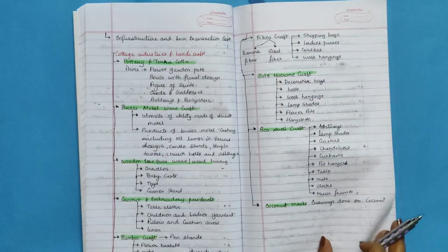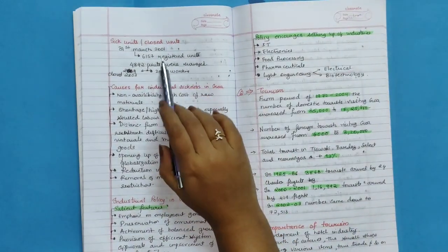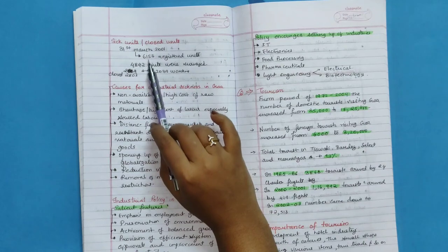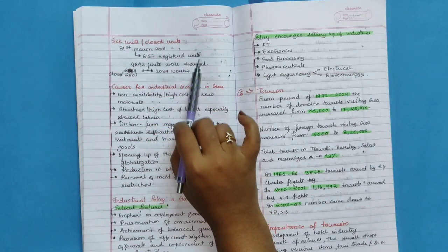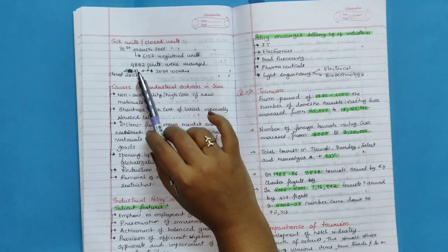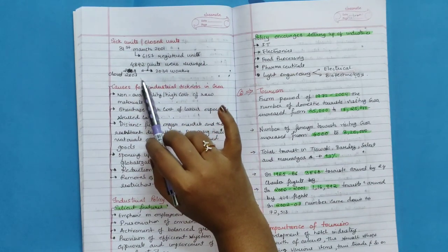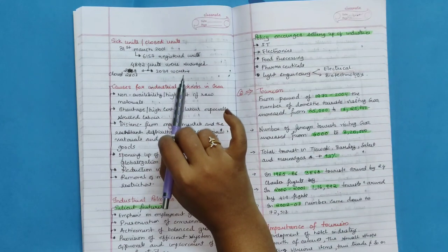Coconut mask carvings done on coconut. Sick units or closed units. On 31st March 2001, 6,157 registered units were there, from which 4,842 units were surveyed and from that 2,803 was closed and 2,039 working.